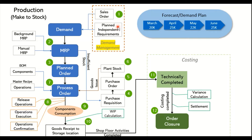The demand is created in the system as plan independent requirements (PIRs). The sales and operations planning team can provide the forecast in two versions: active and inactive. MRP reads only the PIRs in the active version — the inactive ones remain in the demand plan but cannot be transferred to material requirements planning until they are activated. Once activated, these PIRs appear in MD04 for that product.